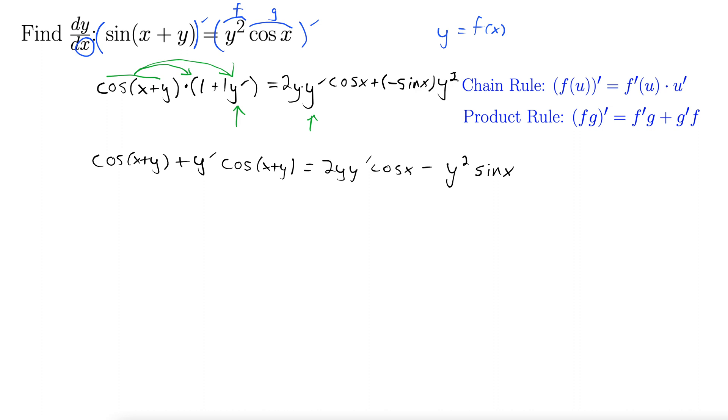Now that we've distributed let's get everything with a y prime in it on one side everything else on the other. So I'm going to take this term here and subtract it from both sides. That gives us y prime cos x plus y minus 2y y prime cos x. Now I'm going to take this cos x plus y term and subtract that from both sides. So this gives me equals negative y squared sine x minus cos of x plus y.